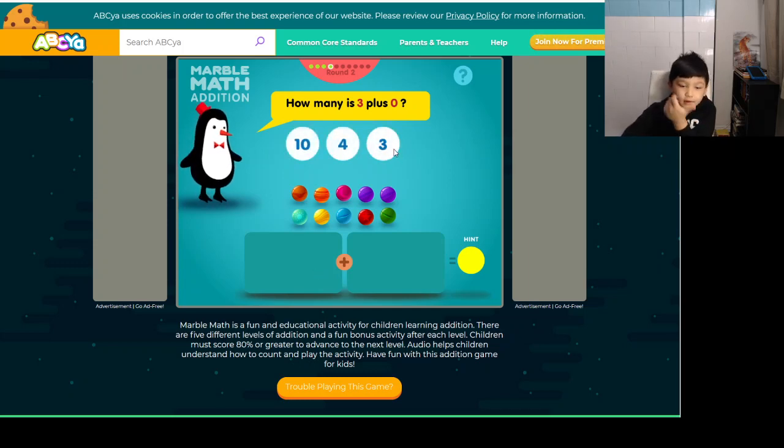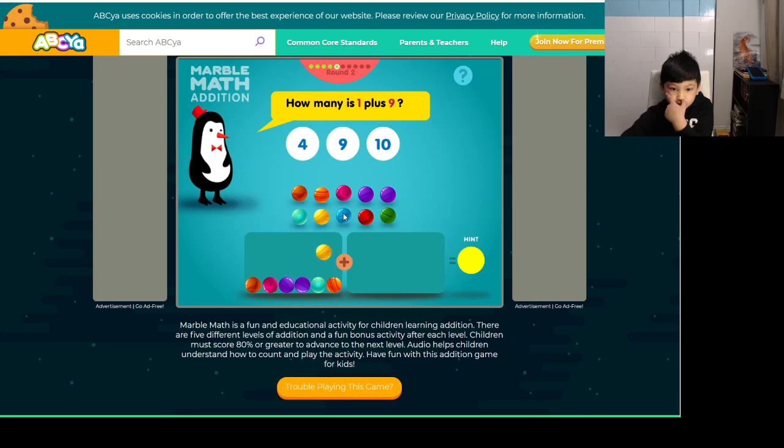Now it's 1 plus 9. So think about it like this. 1 marble. Okay, stop. 1, 2, 3, 4, 5. Okay, stop. 1, 2, 3, 4, 5, 6, 7, 8, 9 marbles. And add 1 to 9 makes 10. It's 10 marbles.